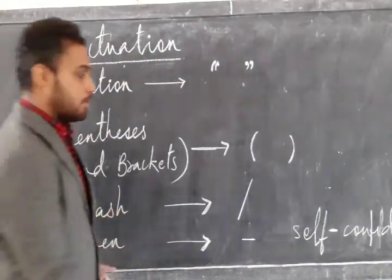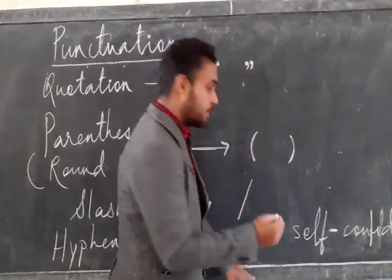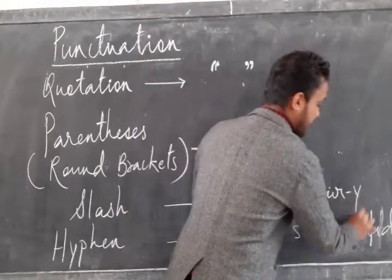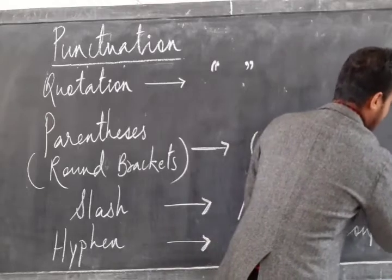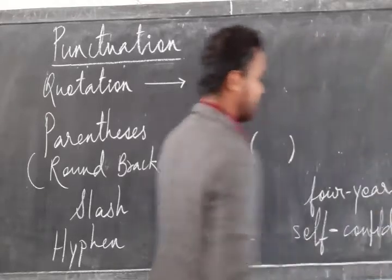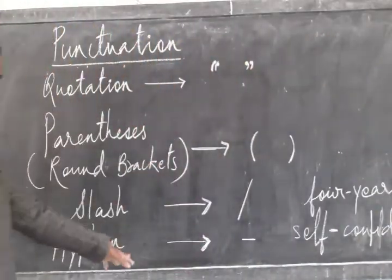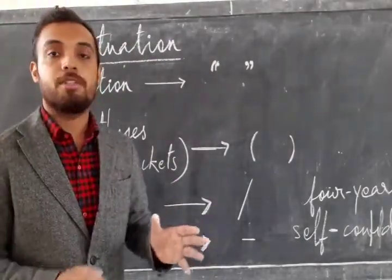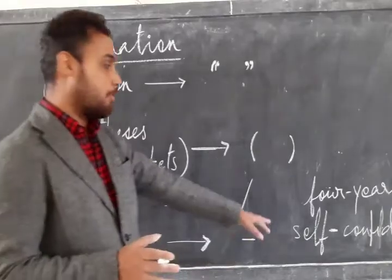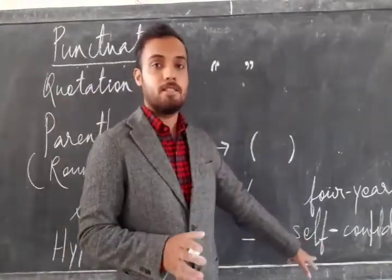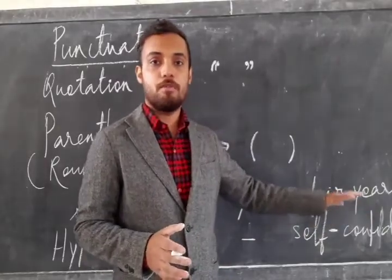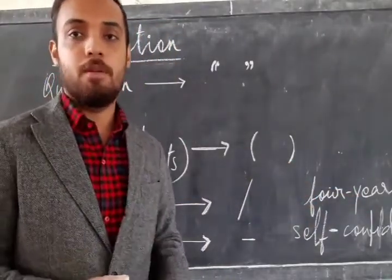We can also use it to join the syllables like he is four-years-old. So that is why the use of hyphen is to join or separate the syllables. Over here, she is self-confident, she is four-years-old. We are joining and separating the syllables.